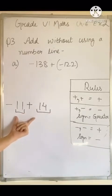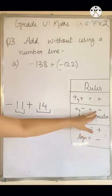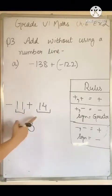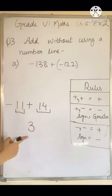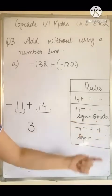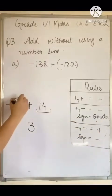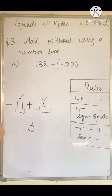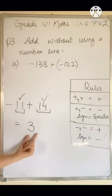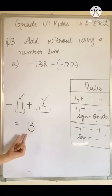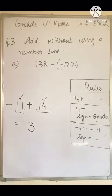Since one integer is negative and the other is positive, rule number 2 says we subtract them: 14 minus 11 equals 3. Now we add the sign of the greater integer. Out of 11 and 14, the greater is 14, and its sign is plus. So the answer is positive 3. Since a number with no sign before it is always positive, we write just 3.